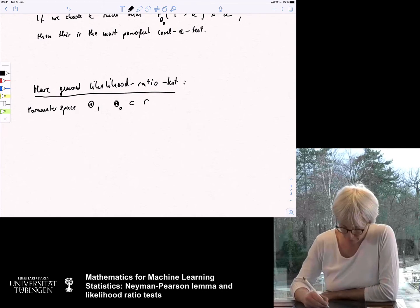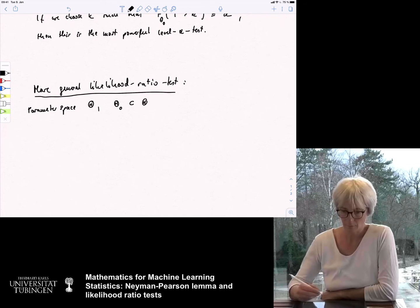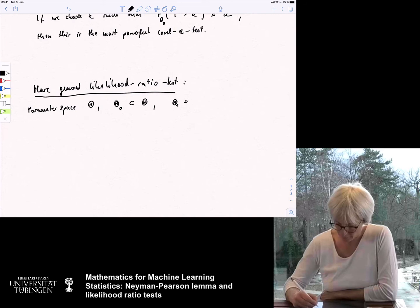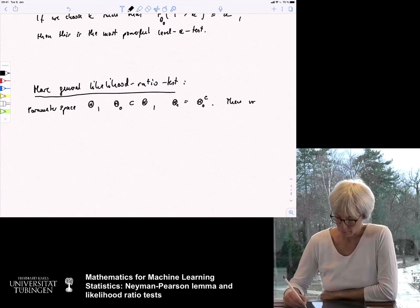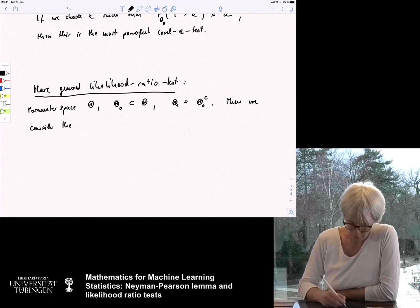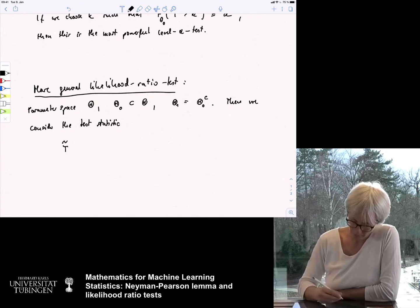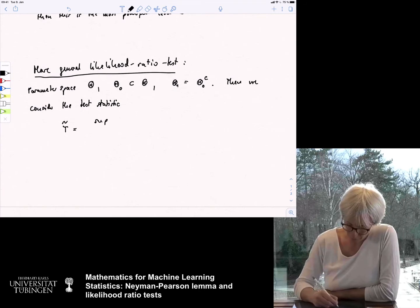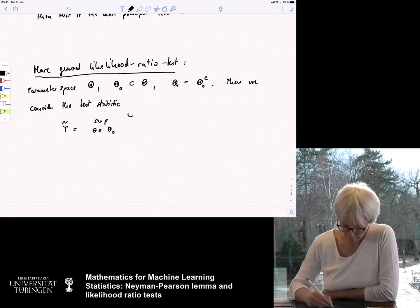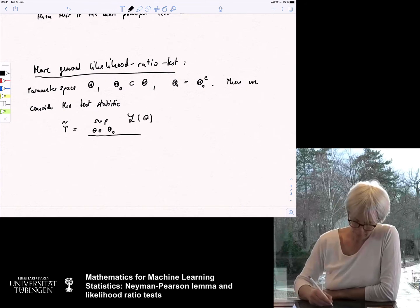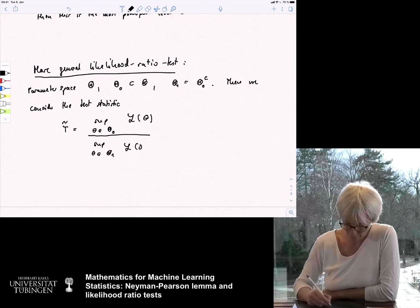So, we no longer assume that we have a point or a simple hypothesis. We just say theta zero is any set in this space. And then, we define the set theta one, which is just the complement of theta zero. And then, we consider the test statistic. I mean, sometimes, the naive one would be T tilde, which is just the supremum over theta in theta zero of the likelihood of theta divided by the supremum over theta in theta one of the likelihood of theta.